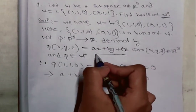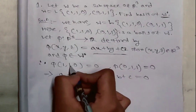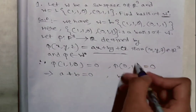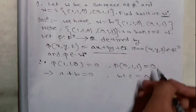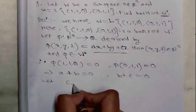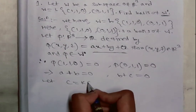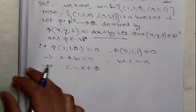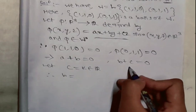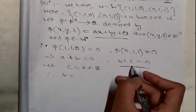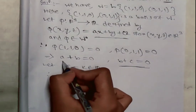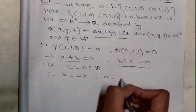That implies a + b = 0 and b + c = 0, by putting the values into the equation. For (1,1,0): putting x=1, y=1, z=0 gives a + b = 0. Similarly for (0,1,1): b + c = 0. Now let c = k, which belongs to the real numbers. Therefore b = -k.